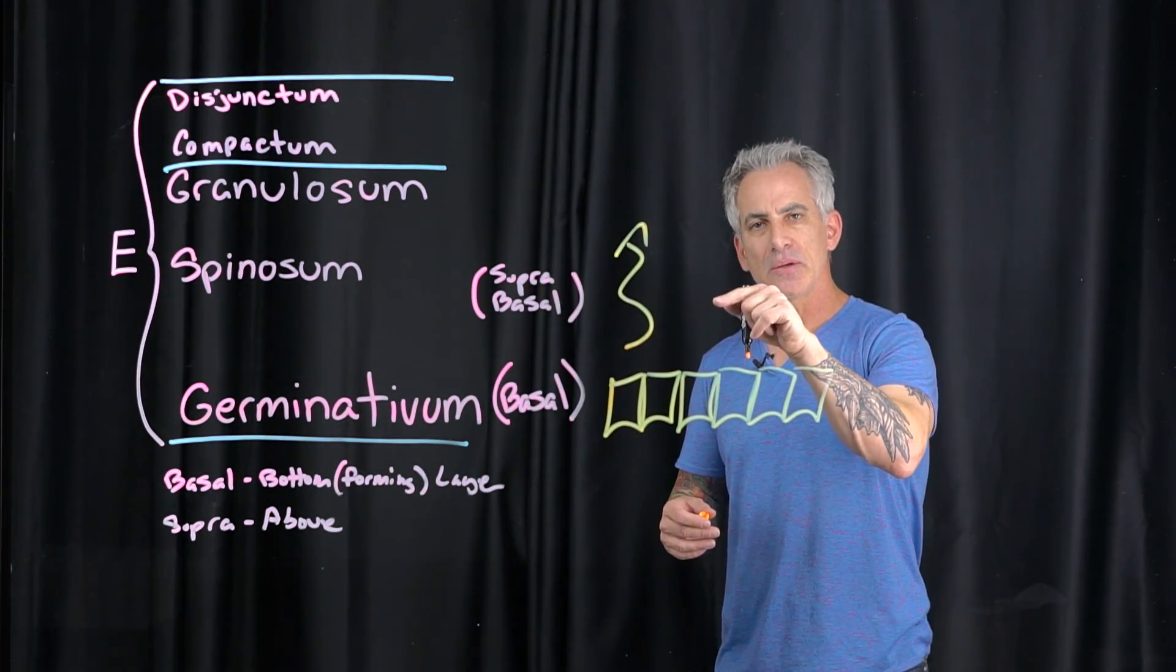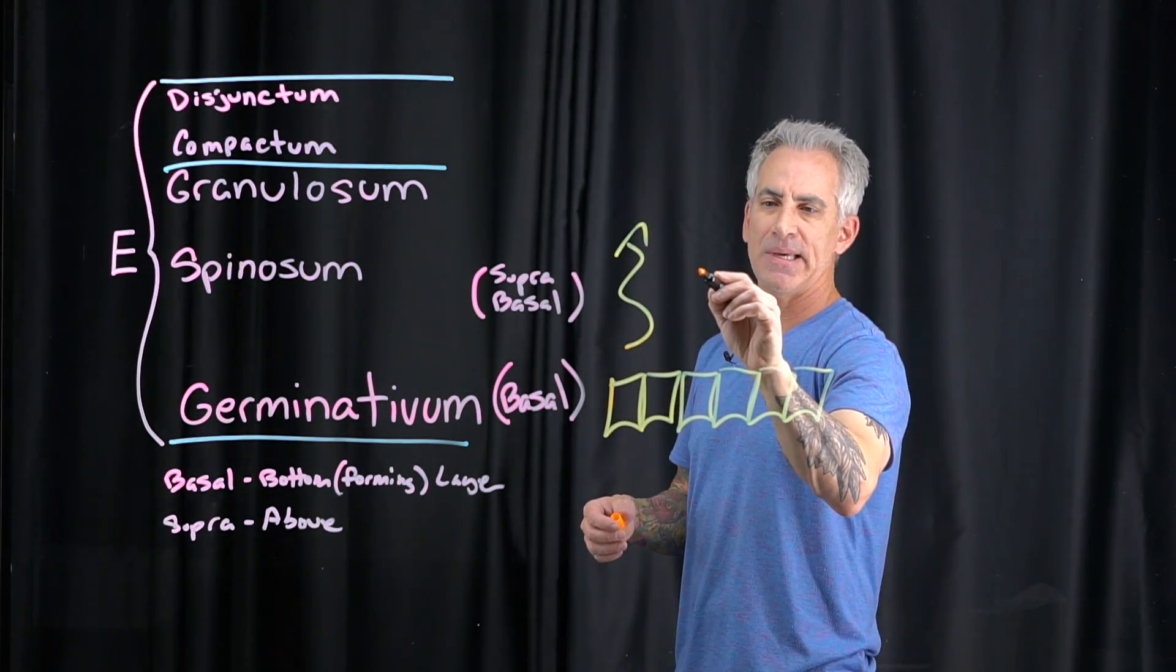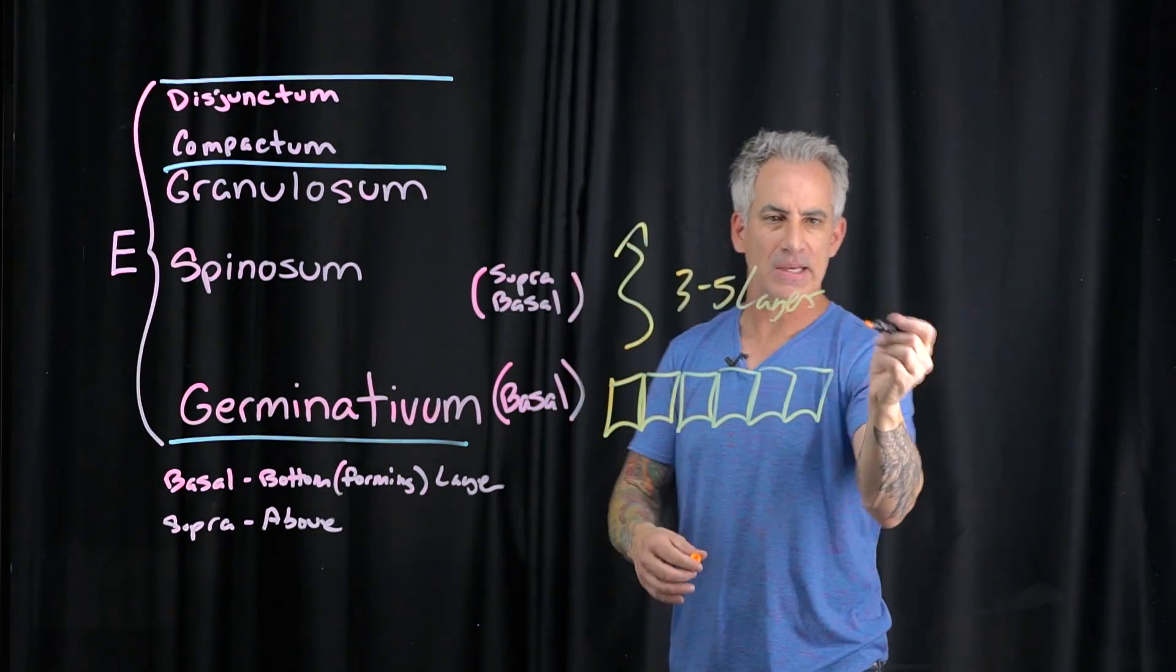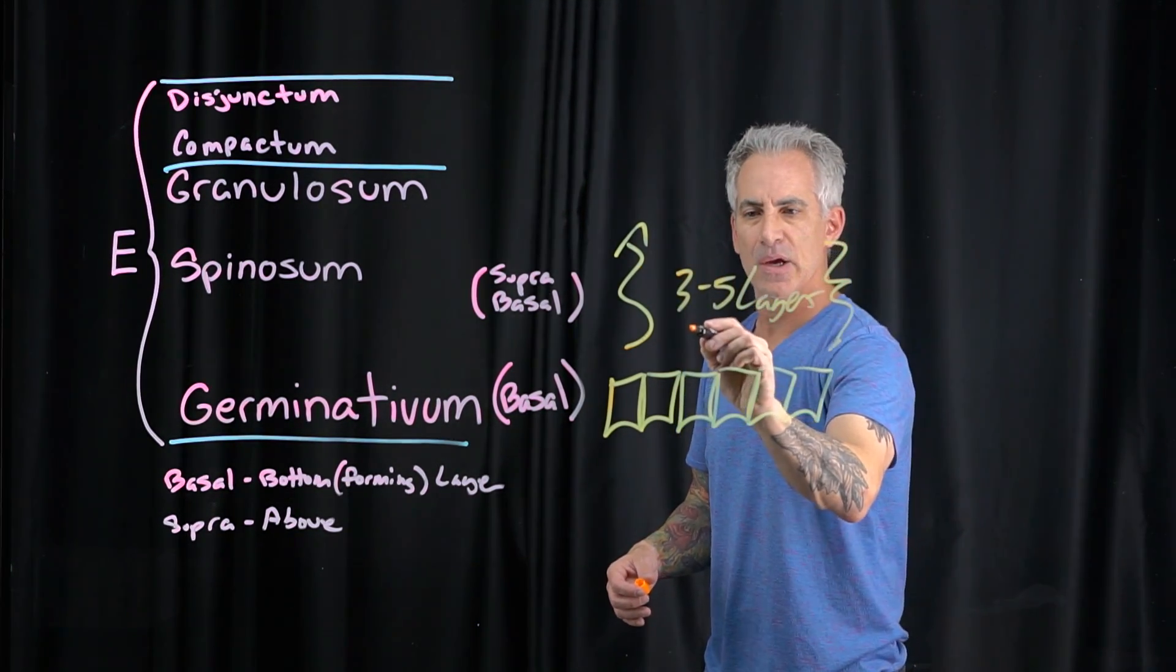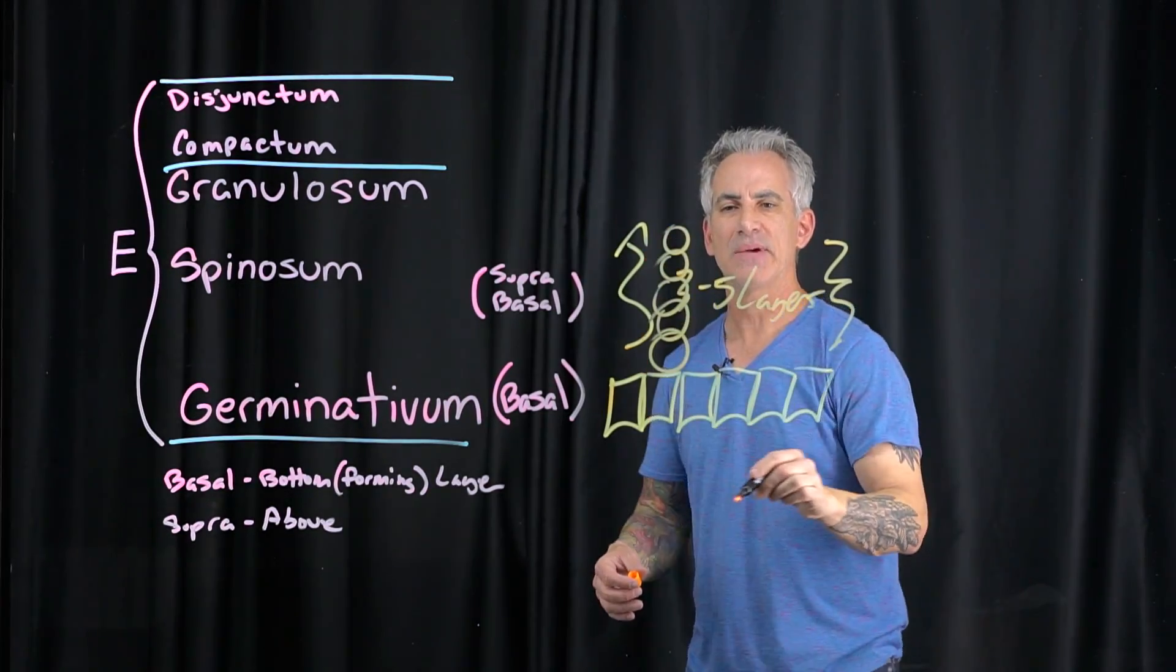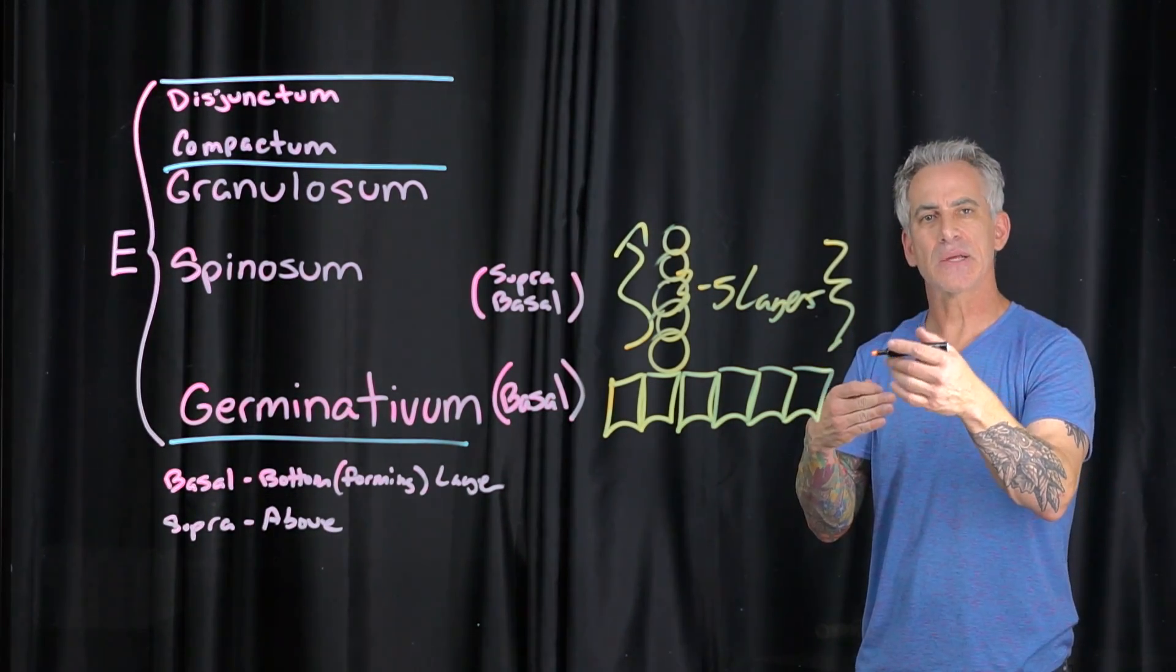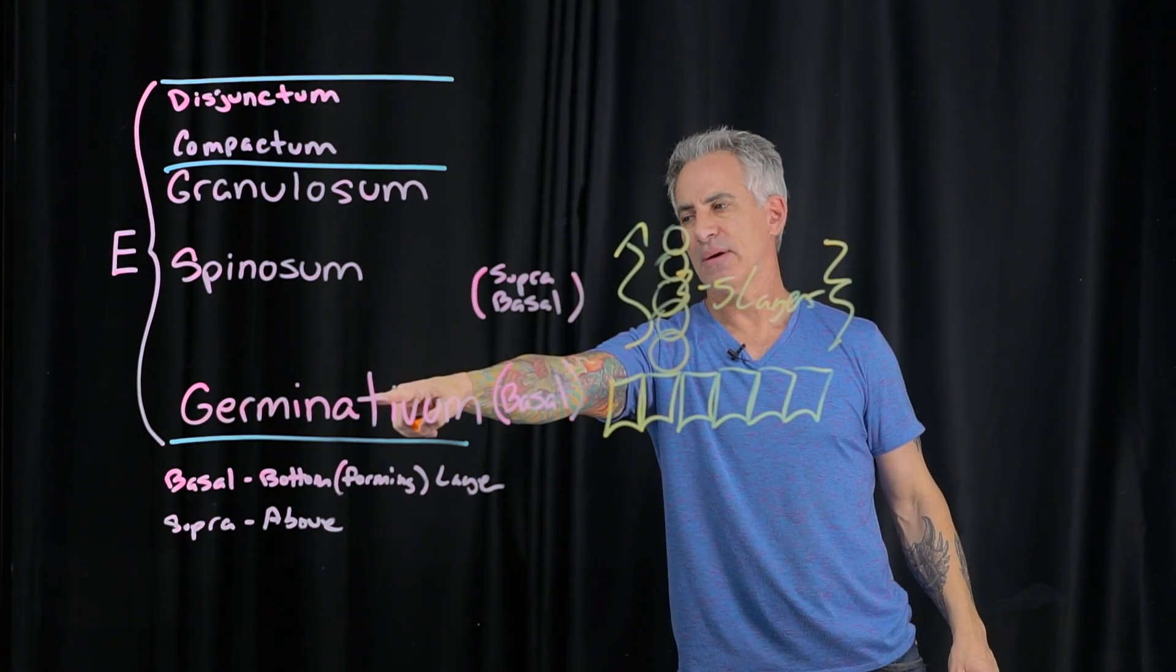If you hear suprabasal cell, that is basically three to five layers. I could probably do it right here. So I'll do this crudely: one, two, three, four, five. So that would basically be the suprabasal layer, meaning skin cells that are above the basal layer within this layer of the skin.